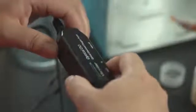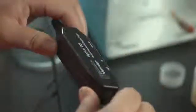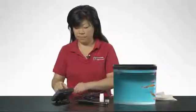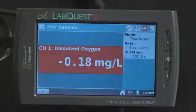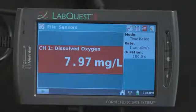To prepare the optical DO probe for use, make sure the storage bottle is removed. Position the switch to either the milligrams per liter or percent saturation setting. Connect the optical DO probe to LabQuest 2. The optical DO probe will auto-ID. You are now ready to collect data.